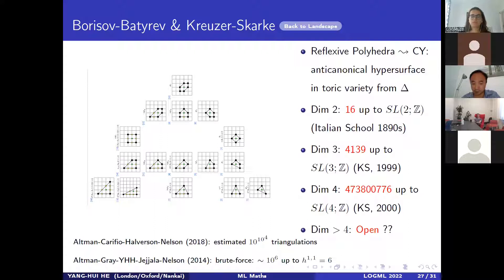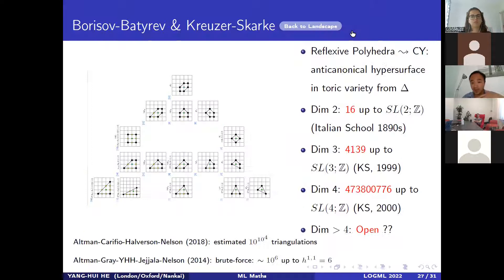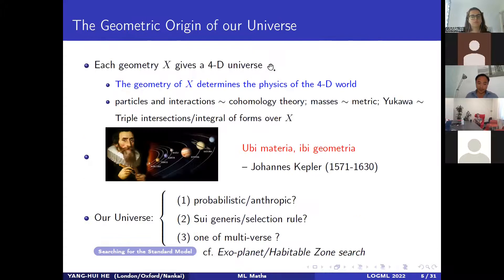To assure you, we are not searching random spaces — you can in fact find something akin to our universe from such a list. Each geometry, such as Ricci-flat Kähler geometry, gives some kind of four-dimensional universe that may or may not be related to any universe we observe.